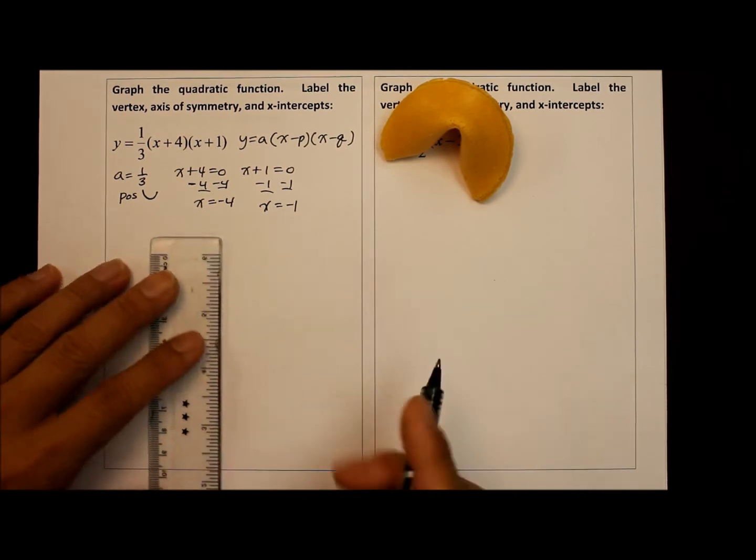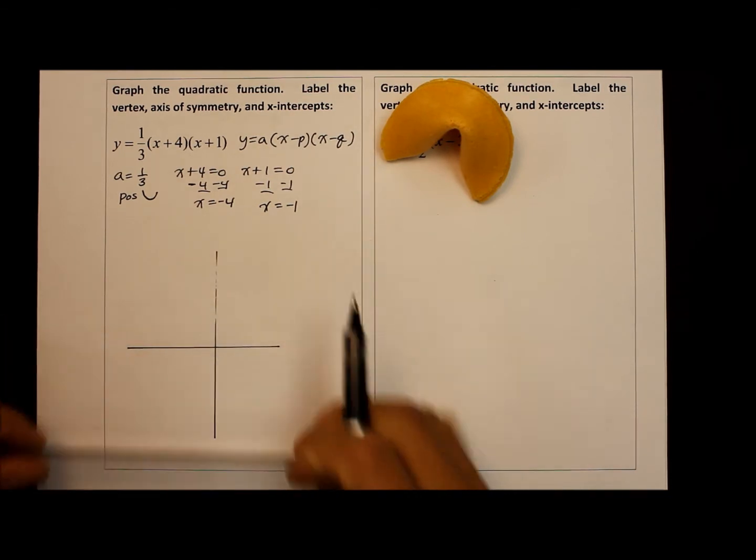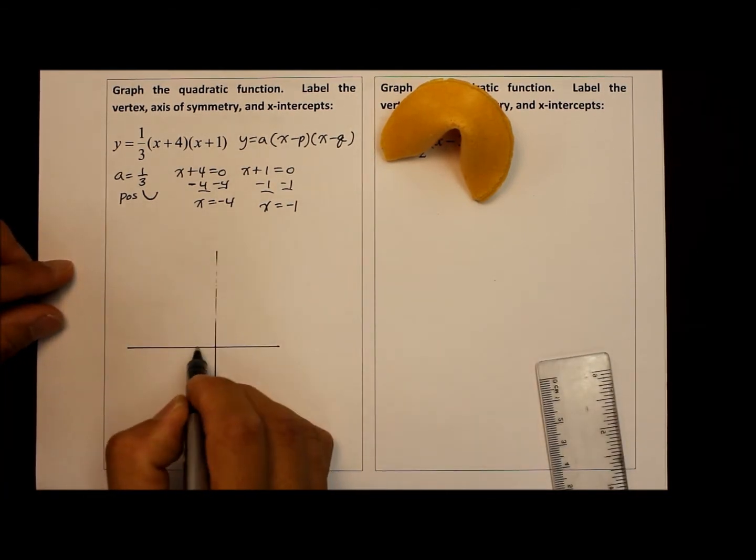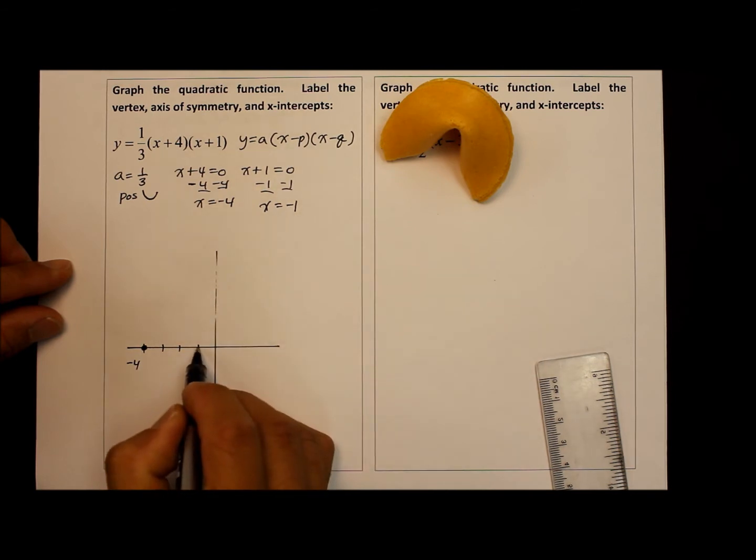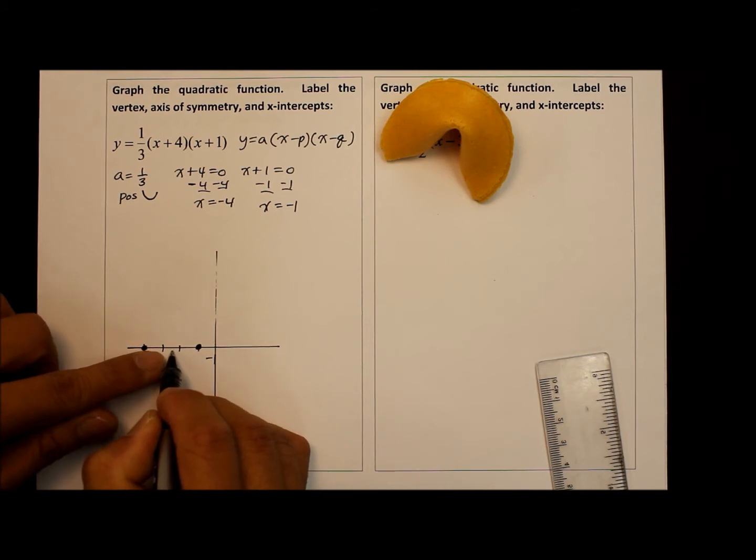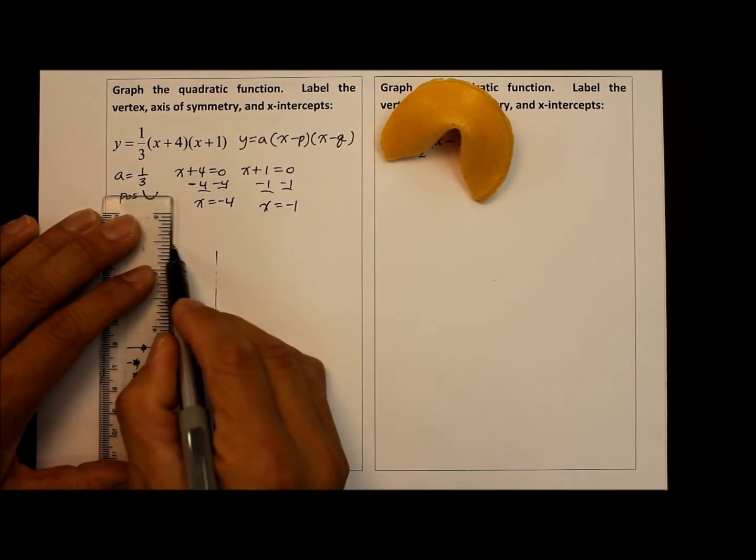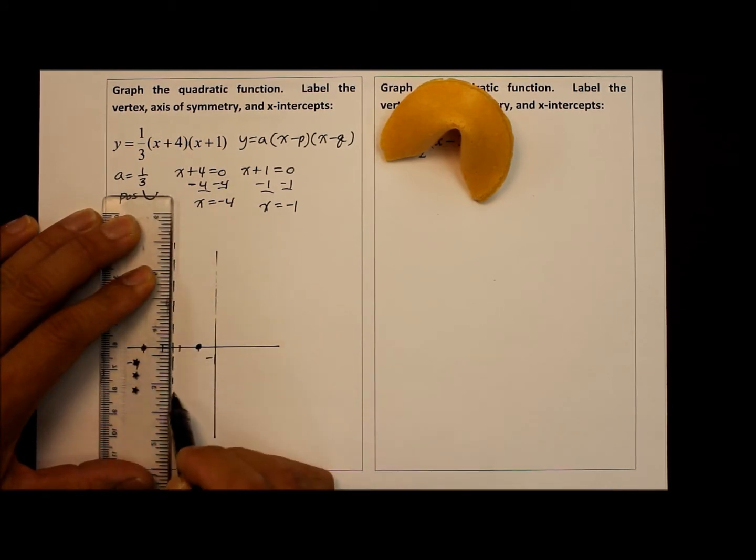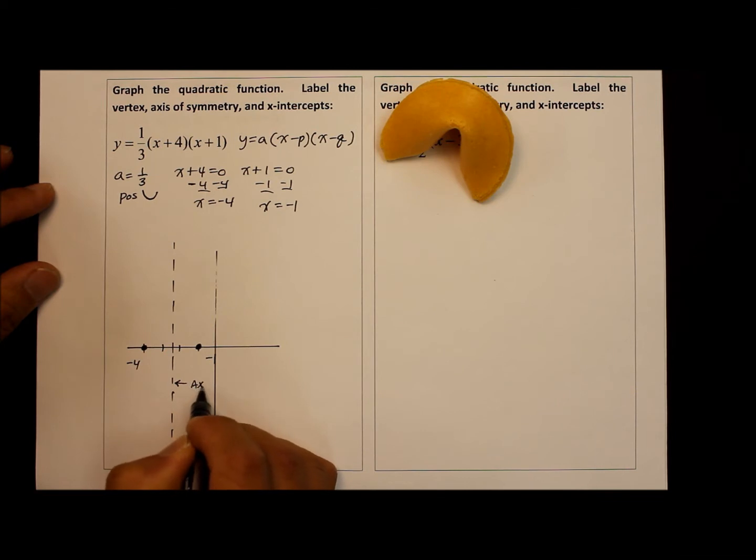So given that information, we could go and graph the parabola already on the coordinate plane. So one of the intercepts is going to be at negative four. And the second point is going to be at negative one. And you can see that if you count inward from the two intercepts, the axis of symmetry is going to be at two and a half. So let's indicate the axis of symmetry with the dashed line. The x value of the axis of symmetry is actually at negative five over two, two and a half that is.